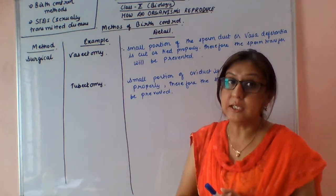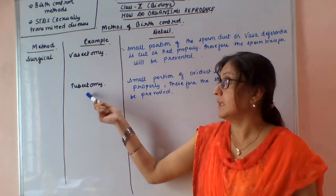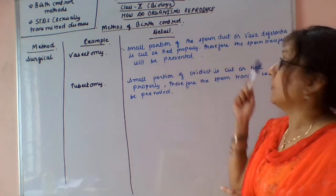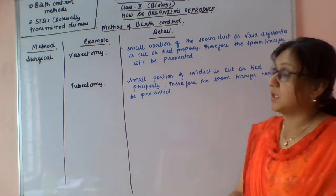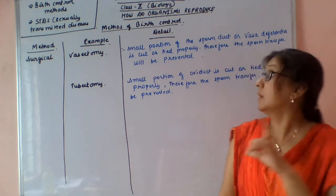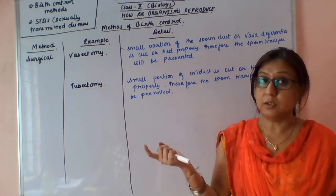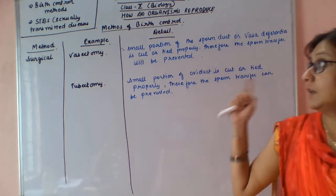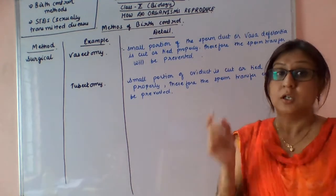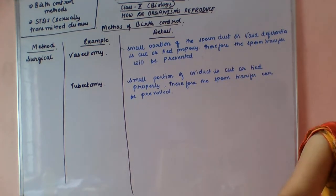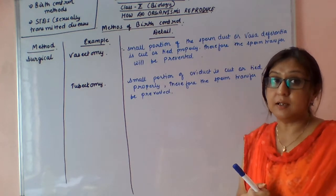The next method is the surgical method. In males, it is vasectomy. In vasectomy, a small portion of the sperm duct, also called vas deferens, is cut and tied properly. Therefore, sperm transfer is prevented because the sperm cannot travel from the testes to the urethra.